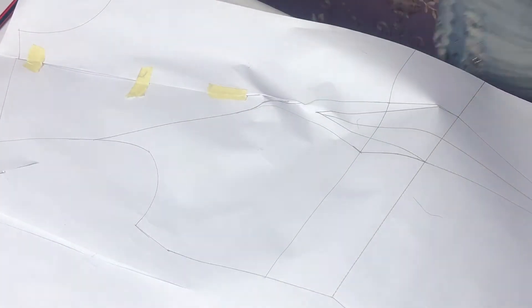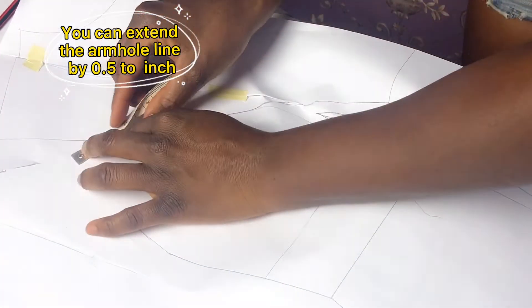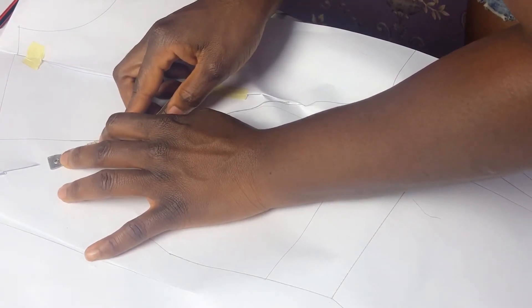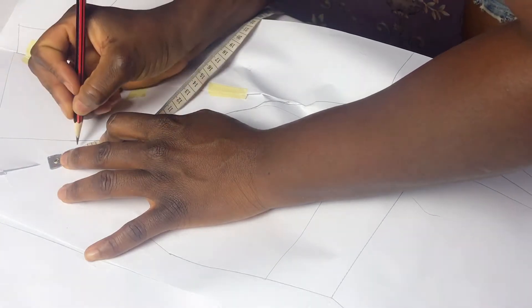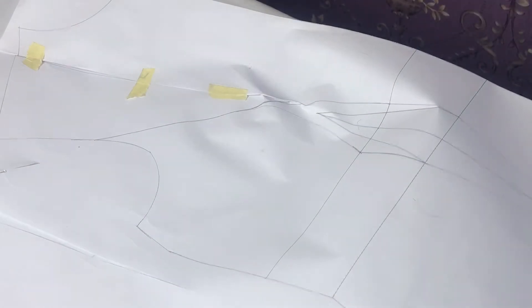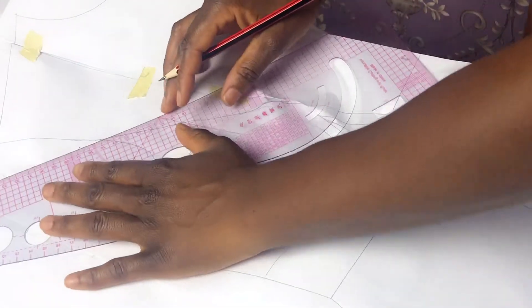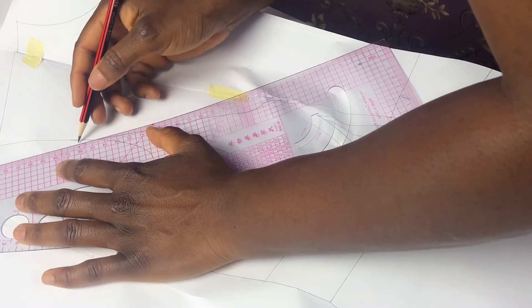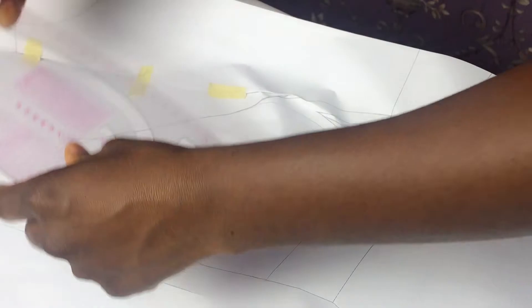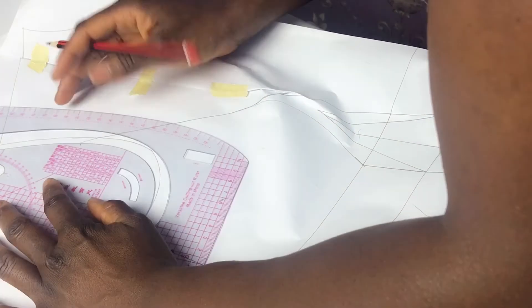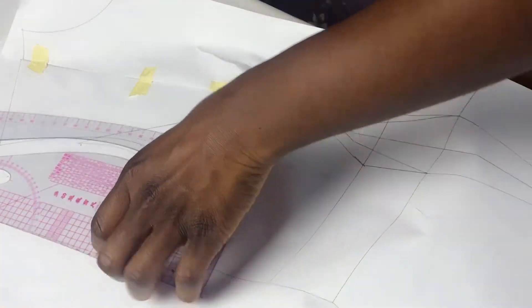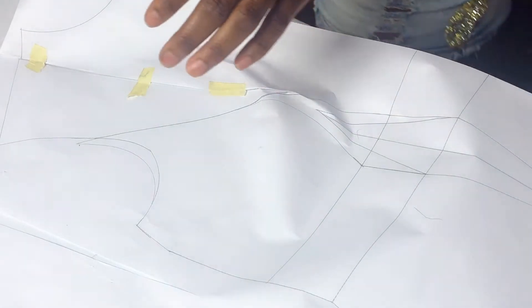I also extended my armhole line by 0.5 just so that my pattern pieces are equal when it's time to sew. This is because sometimes you end up with one part shorter than the other, especially the piece with the side seam. To prevent this or correct this, you can extend that line by 0.5 to 1 inch.